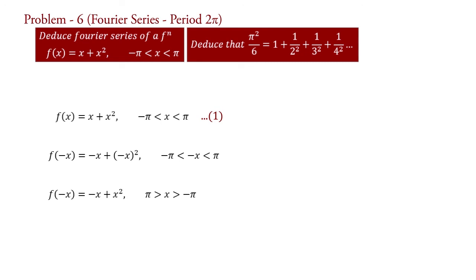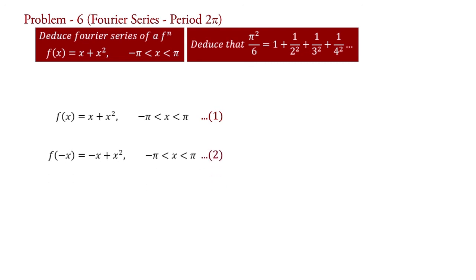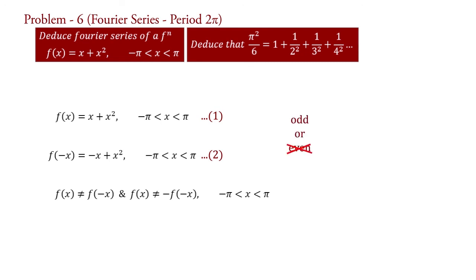Now write the interval in inverse order. Therefore, f(−x) = −x + x² for −π < x < π, say equation 2. Comparing equation 1 and 2, we say that f(x) ≠ f(−x) and also f(x) ≠ −f(−x) in the given interval. Therefore, our function is neither even nor odd.